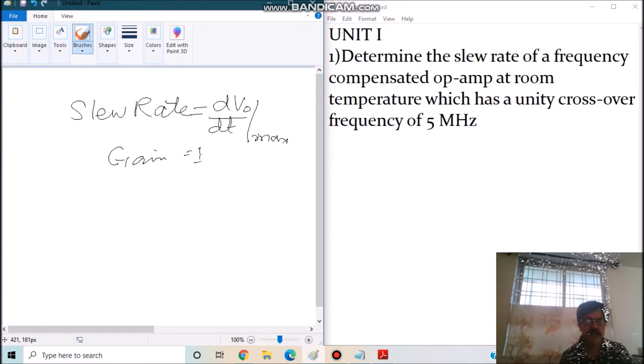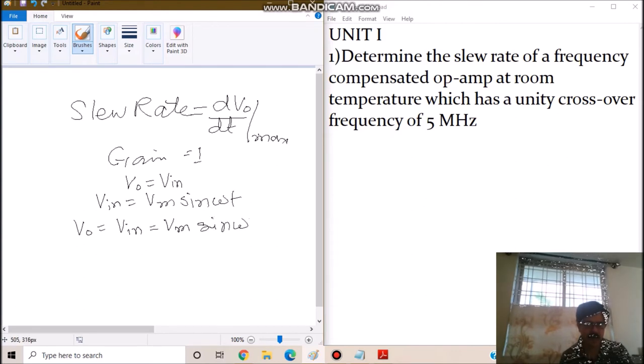When the gain is unity, we can say the output is equal to input. Let us take for example that the input is given by Vm sin omega t. So our Vo will be equals to Vin which is nothing but Vm sin omega t.